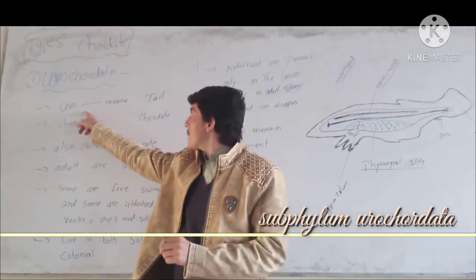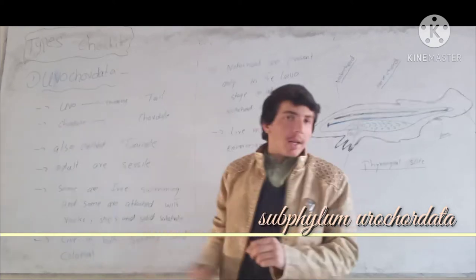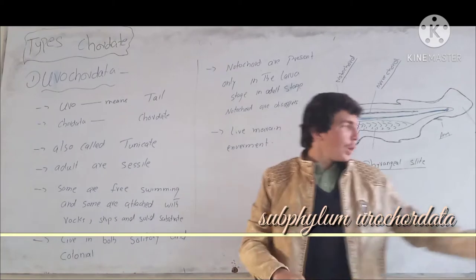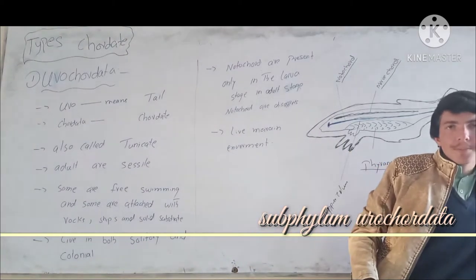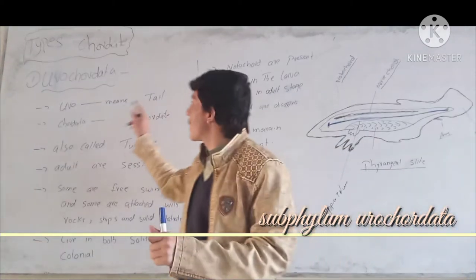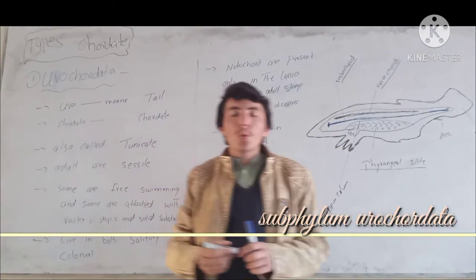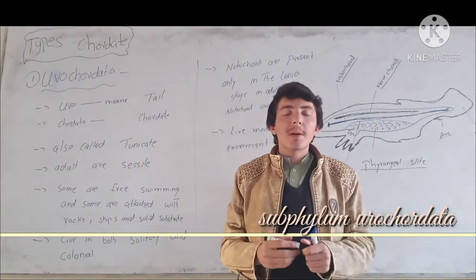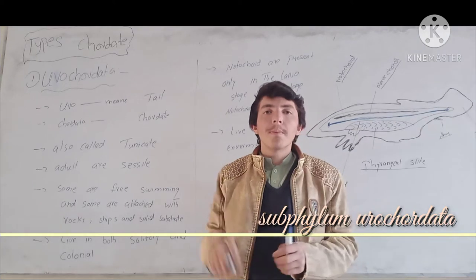The name is Uro-coordinate. Uro means tail. This is the name of the dom — Uro means tail in this context.